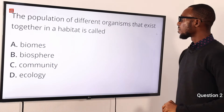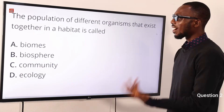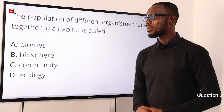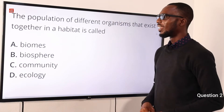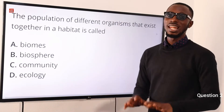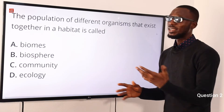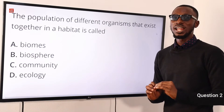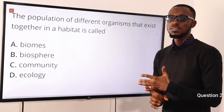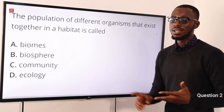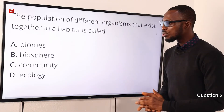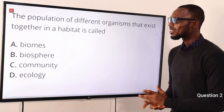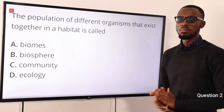Question number 2. The population of different organisms that exist together in a habitat is called what? That is called community — we are talking about all of the populations available, existing together. Biomes talks about a large natural habitat. When we talk about biosphere, that is any of the spheres where life can be found — the atmosphere, lithosphere, or hydrosphere. Ecology is the study of an organism in its environment. The correct option is option C for community.